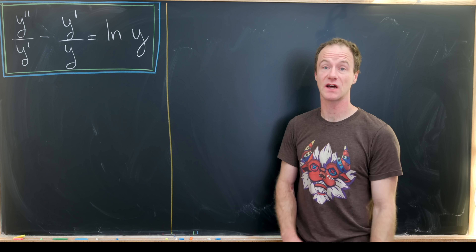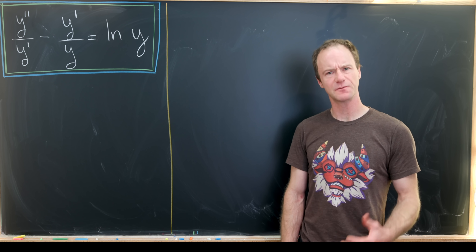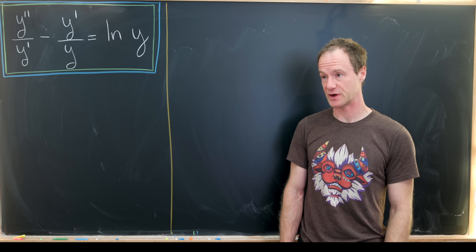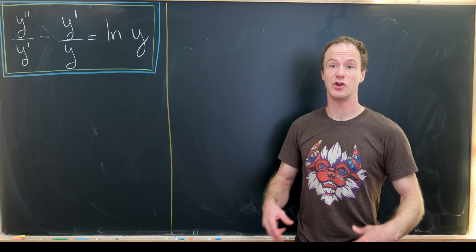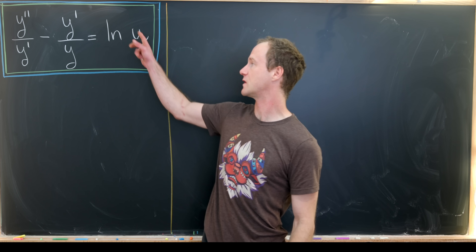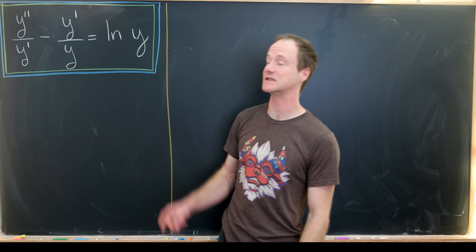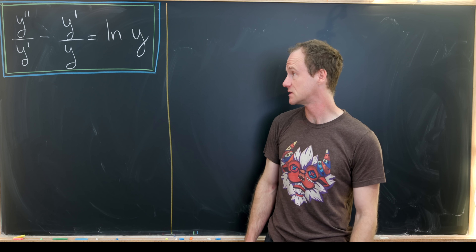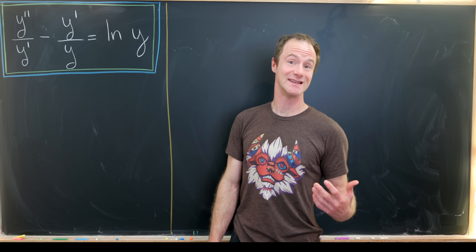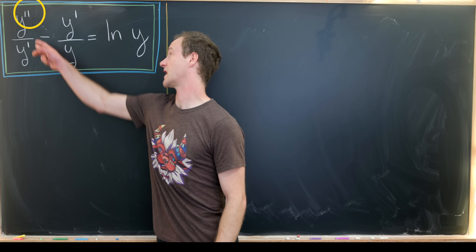Today we have a second-order autonomous differential equation. An autonomous differential equation is one where you only see the dependent variable — so notice there are only y's here. There's no independent variable except tucked inside of the y's, the y primes, and the y double primes. When we say second-order, we mean the highest derivative is the second derivative.